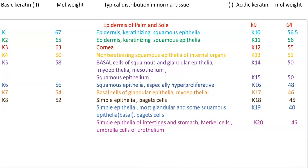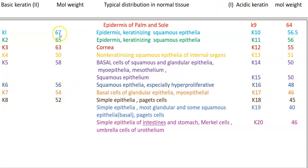Cytokeratins from the acidic group are often paired with their basic counterpart, such as CK10 with CK1, CK11 with CK2, and CK8 with CK18. K1 to K8 are basic keratins and K9 to K20 are acidic keratins, and they have different molecular weights — low molecular weight and high molecular weight.